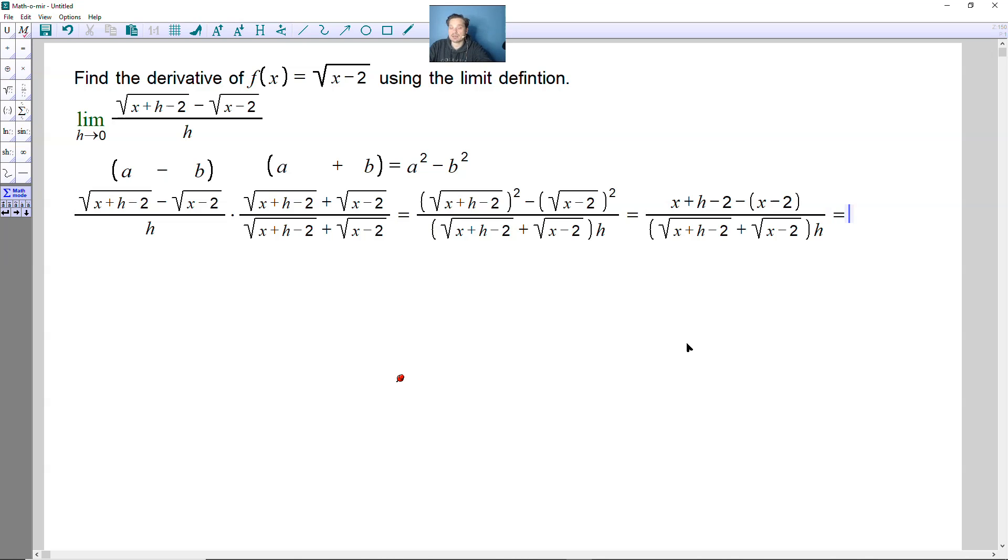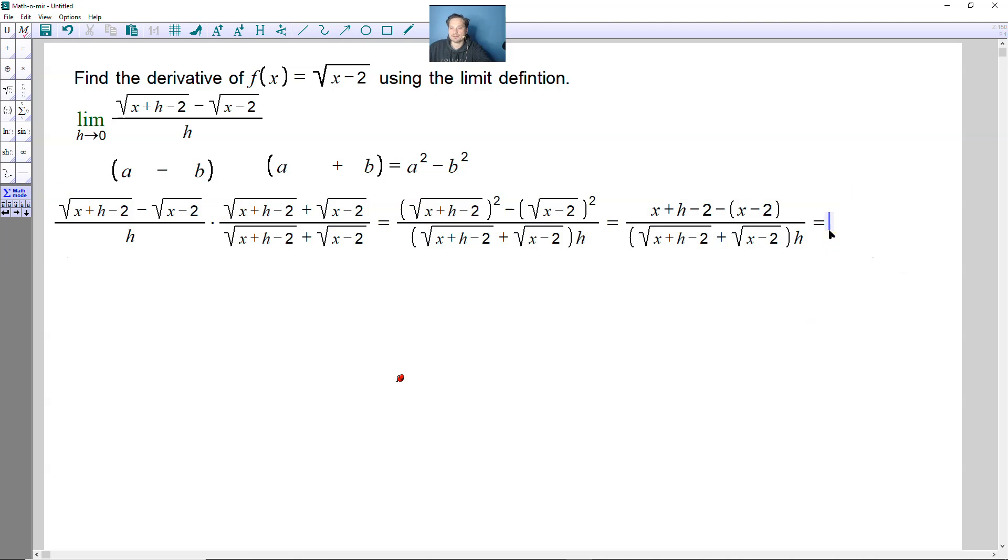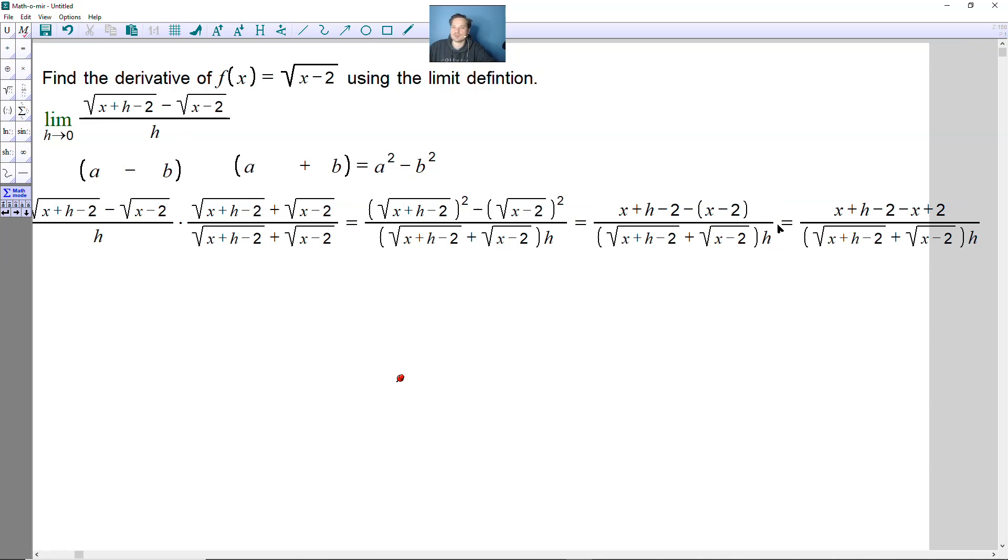Continuing, you're going to distribute the negative there. So I need to move this over because it's going to get pretty long here. I'm going to have the following. You're going to have x plus h and then minus 2 minus x and then plus 2. And then copy the bottom completely like this.